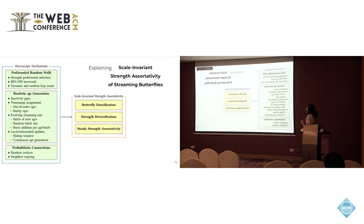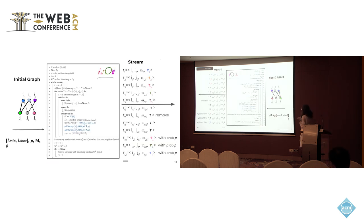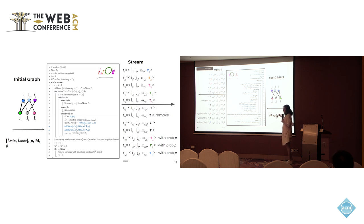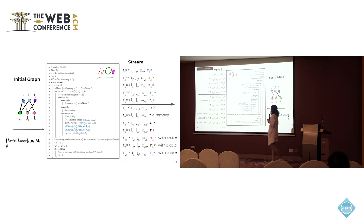To explain how and why these three patterns — the phenomenon we call the scale-invariant strength assortativity of streaming butterflies — occur, we introduced a set of micromechanisms or local rules in the body of a graph algorithm called SCOPE, designed to reproduce these growth patterns in streaming graphs. The algorithm takes in an initial graph, which can be some edges from a real-world dataset, and uses four parameters to expand this graph with realistic mechanisms.